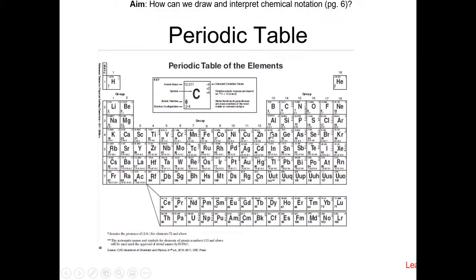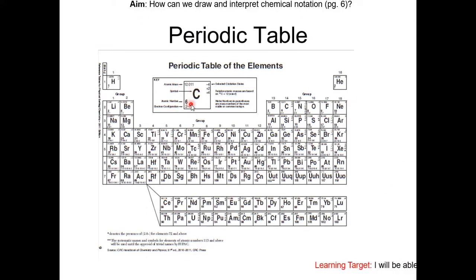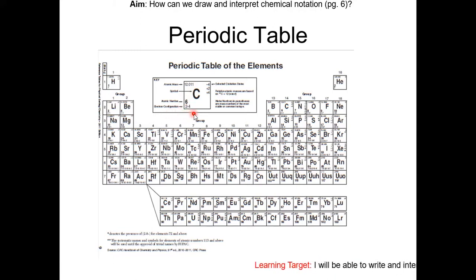This is the periodic table from your reference table. Notice that it tells you the atomic mass, atomic number, and electron configuration. Through the electron configuration, we can get the number of electrons.